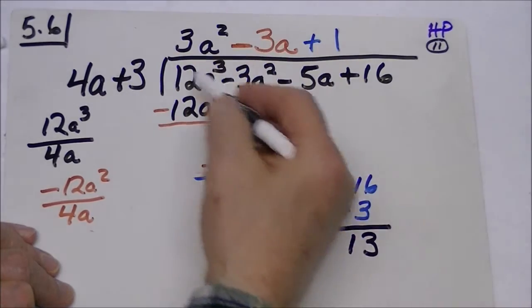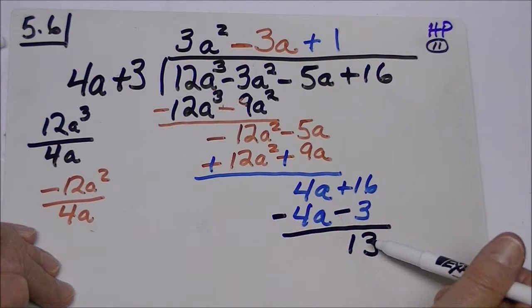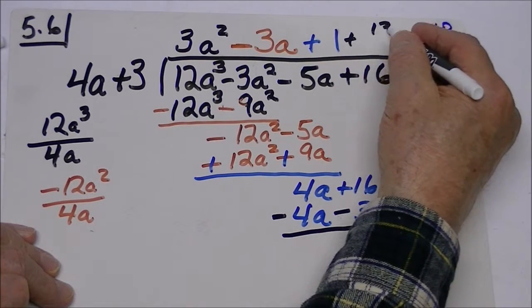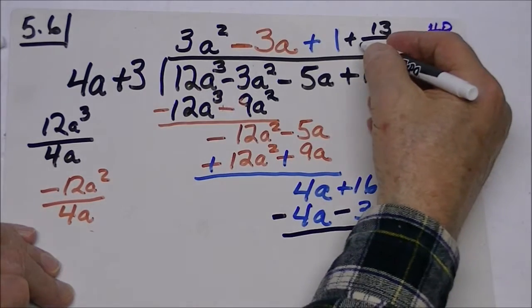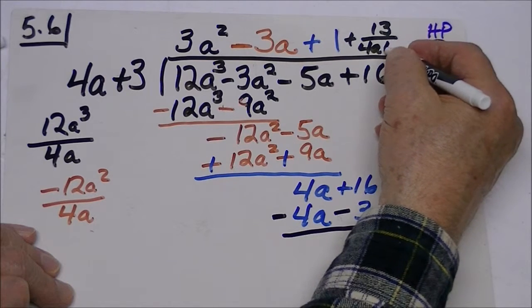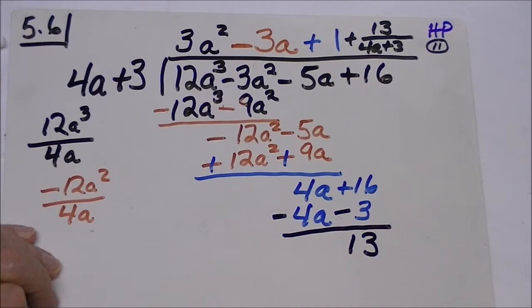So our final answer then would be this plus 13 over what we have out here: 4a plus 3. And that would be the way you put it into standard form.